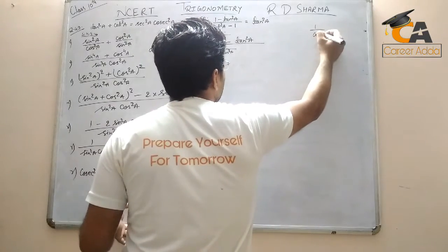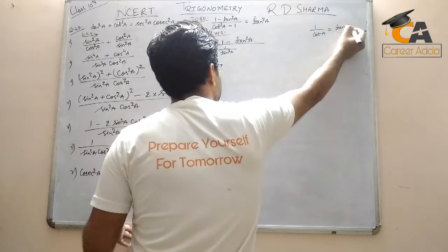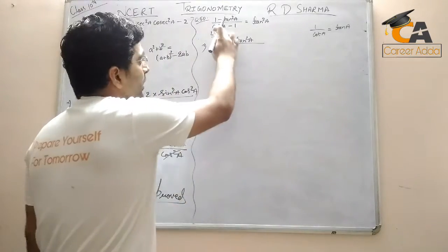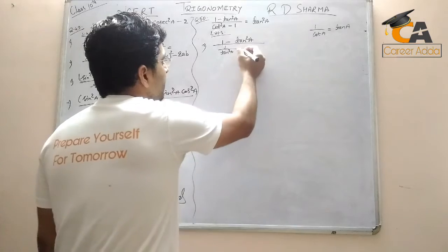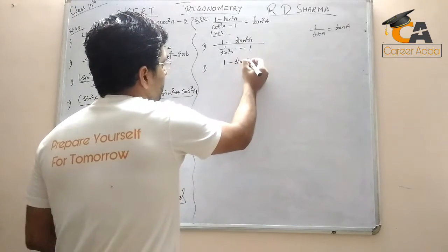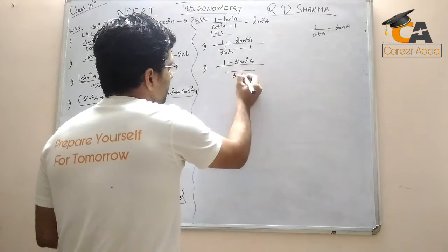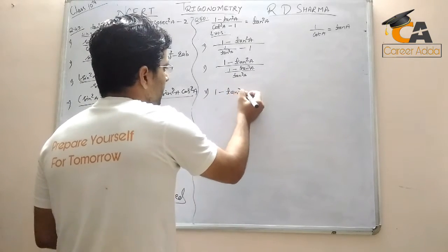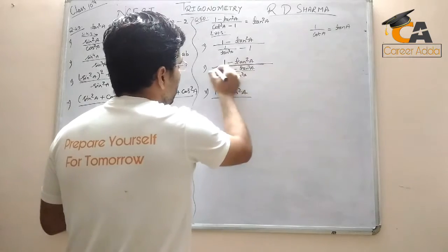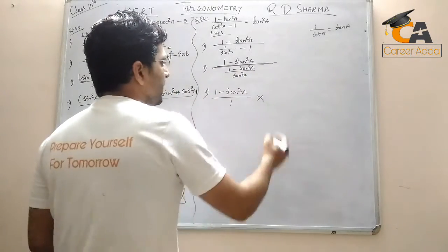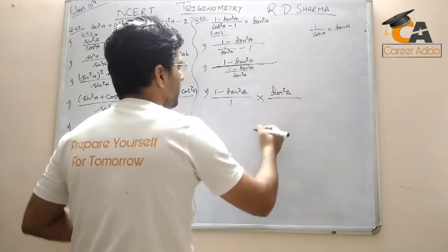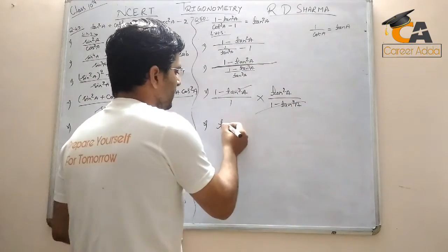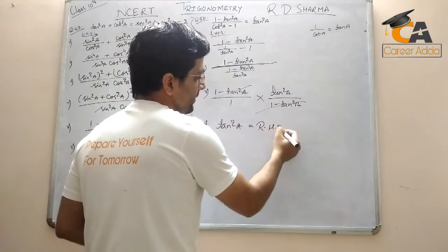For the next question, 1 upon cos a equals sec a. So 1 upon cos square a gives sec square a. Then sec square a minus 1 equals tan square a. We have 1 minus tan square a cancel out, and here we get tan square a, which is our RHS. Hence proved.